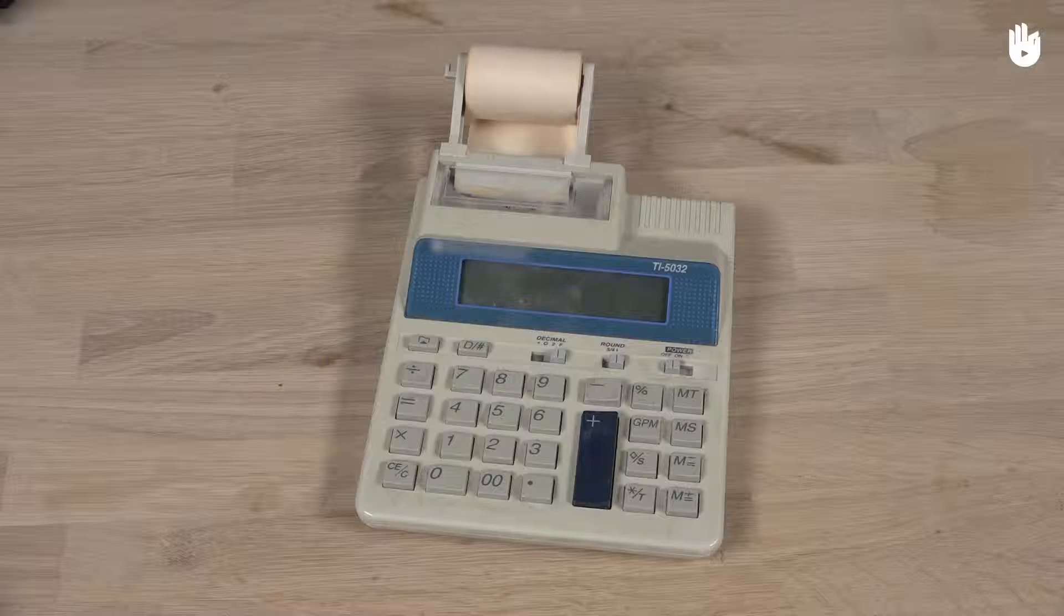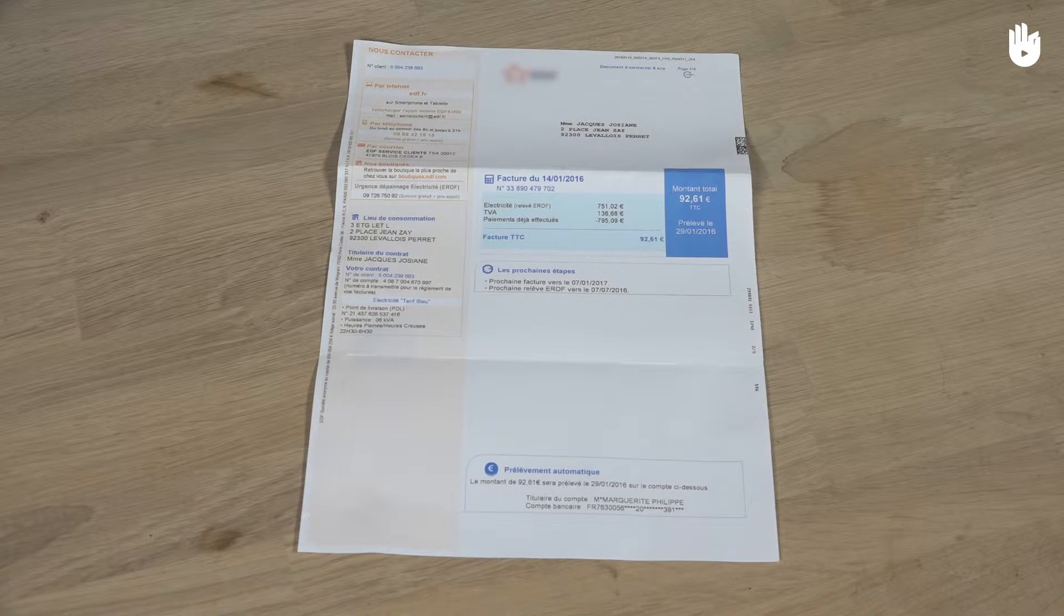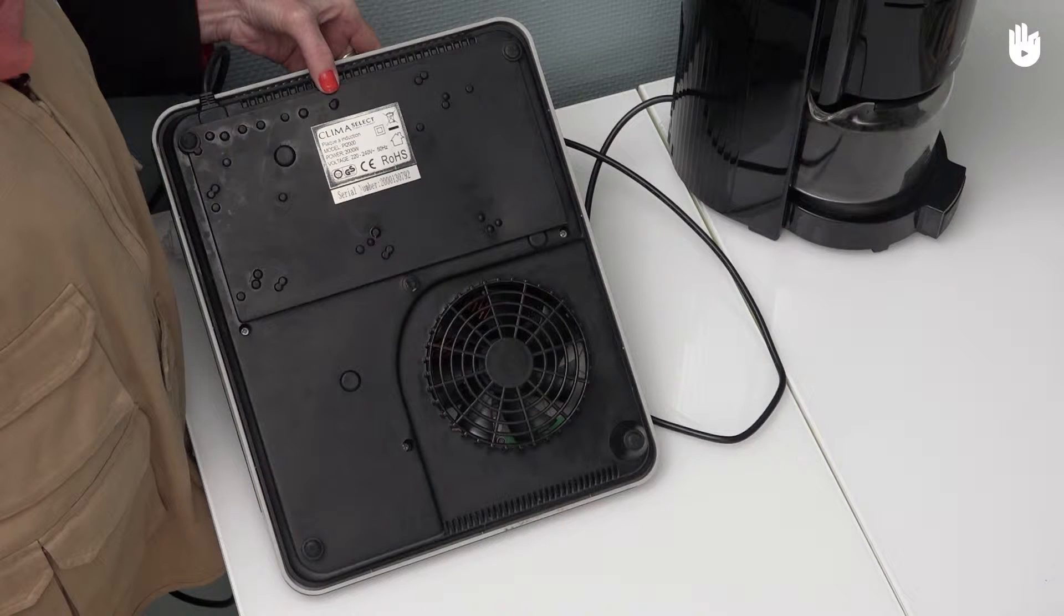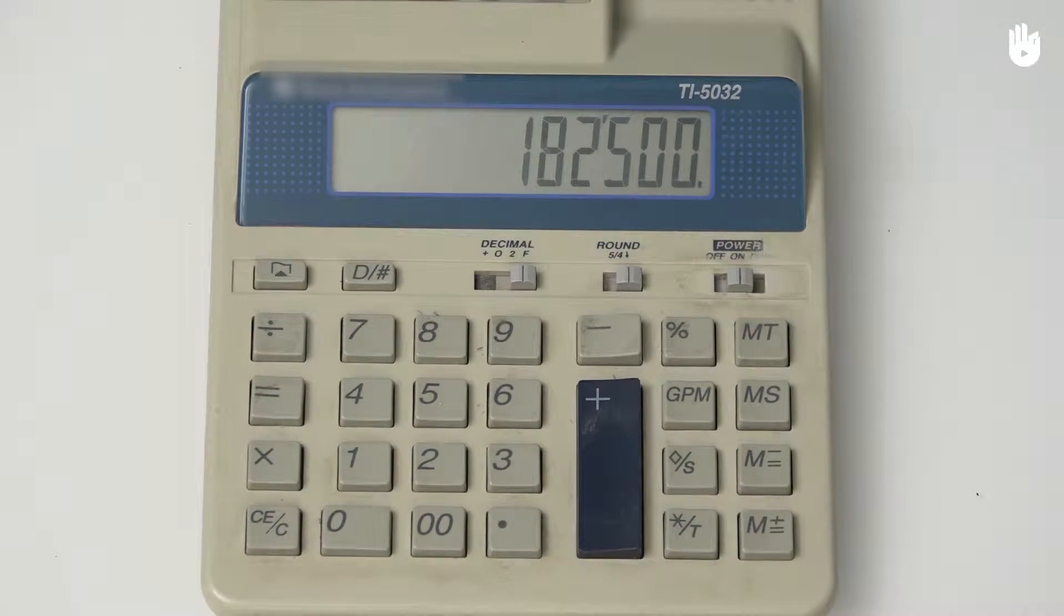To do this, you will need a calculator, an electric bill, a domestic appliance, and its data plate. This procedure will be done in three steps that we will explain in the video.